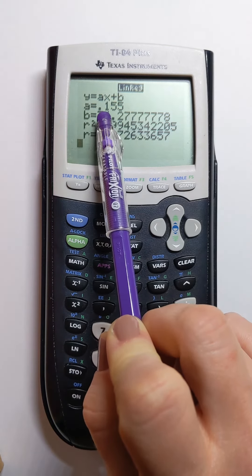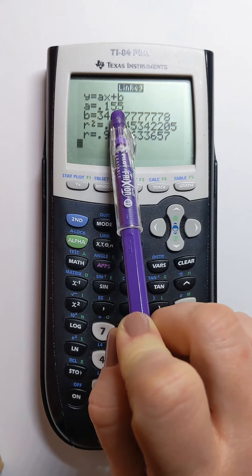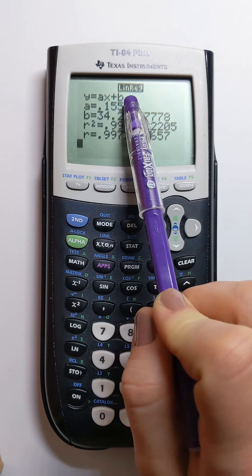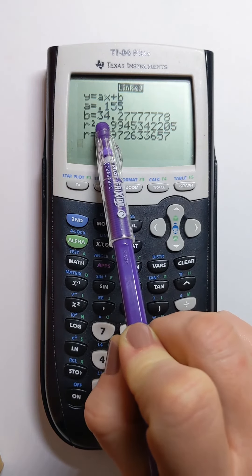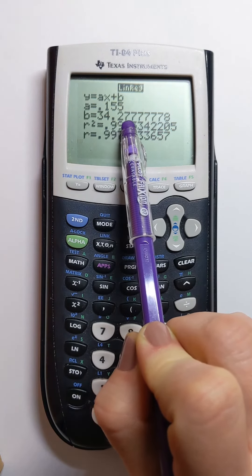It says that a is 0.155 and then b, the value that represents the y-intercept, is written over here. Here it is, 34.2777.